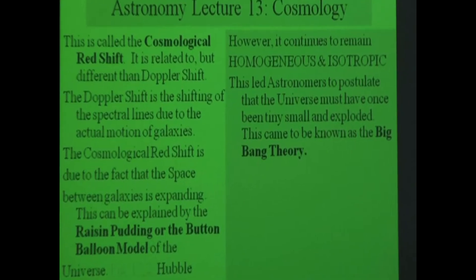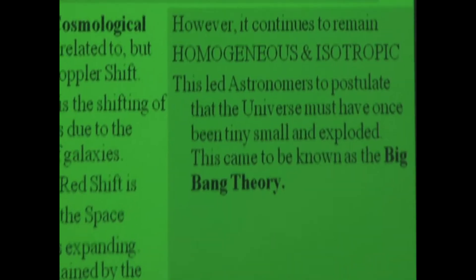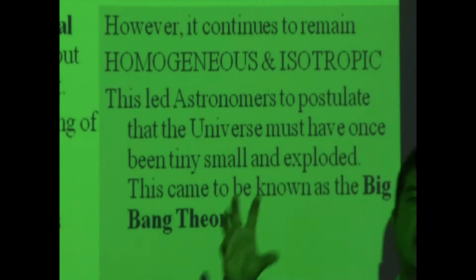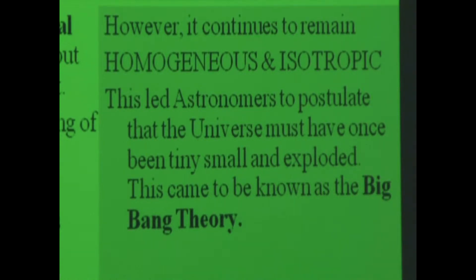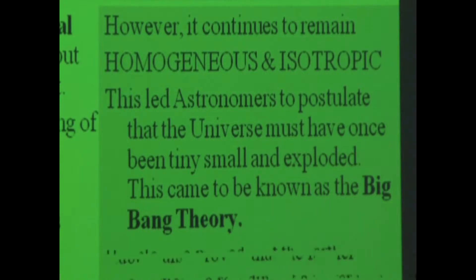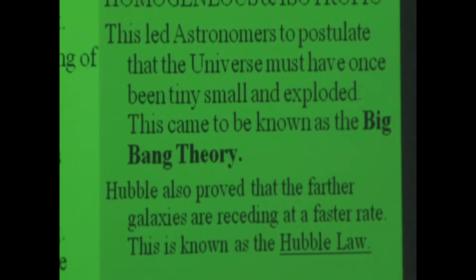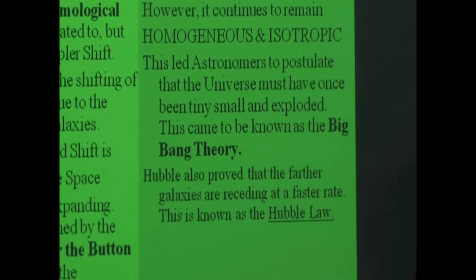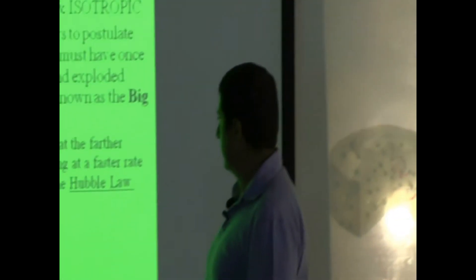This led astronomers to postulate that the universe must have once been very small. When you run the movie backwards, you postulate that the universe began tiny and then exploded — this came to be known as the Big Bang theory, a term that originally started as a mocking label but stuck. Hubble also proved that farther galaxies are receding from us at a faster rate; that's Hubble's law: v = Hd.